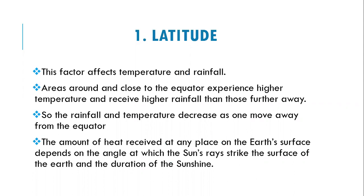Starting with the first factor: latitude. This factor determines the temperature and the rainfall of a region. Areas around the equator experience higher temperatures and receive higher rainfall than those far away from the equator. So rainfall and temperature decrease as one moves away from the equator.